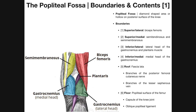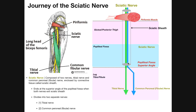The popliteal fossa is a space on the posterior side of the knee — the back side, not the kneecap side. It looks like a kite shape, and the superior angle is formed where the biceps femoris meets the medial hamstring muscle, the semimembranosus. Right at that angle, the sciatic nerve diverges into its two component parts. At that superior angle, the sciatic sheath terminates and the two nerves separate into a distinct tibial nerve and a distinct common peroneal nerve, or common fibular nerve.